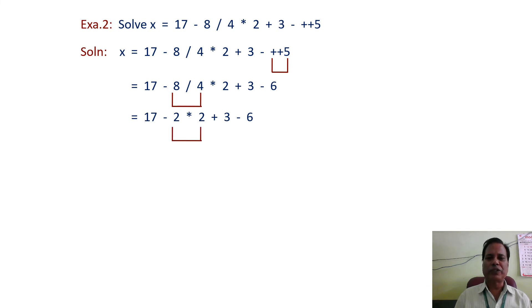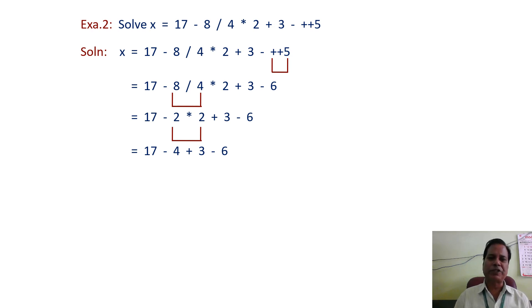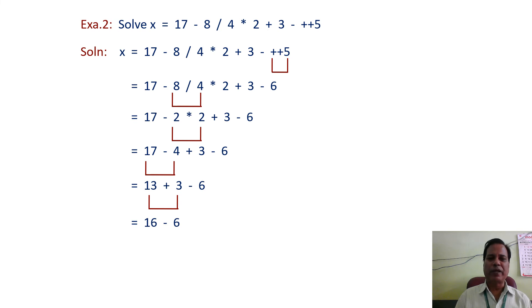Then 2 * 2 is solved next as multiplication has the highest remaining priority, giving 17 - 4 + 3 - 6. Now subtraction and addition operators are present with the same precedence, so we follow the associativity rule. First 17 - 4 = 13, then 13 + 3 = 16, and finally 16 - 6 = 10. In this way, following precedence and associativity rules, we have solved this expression.